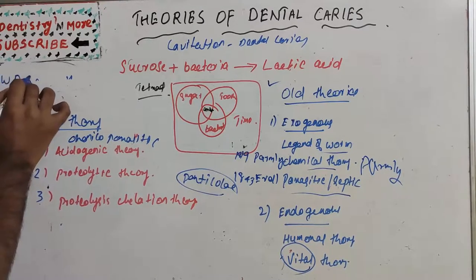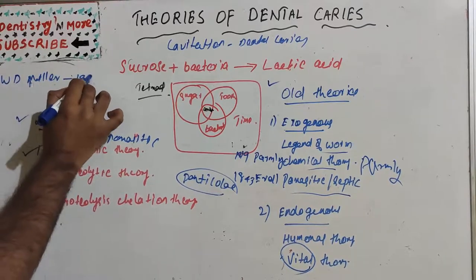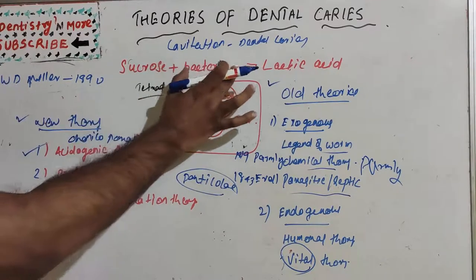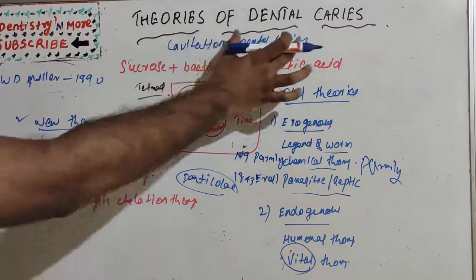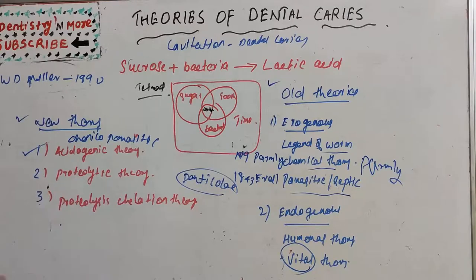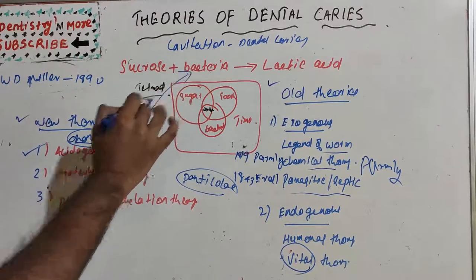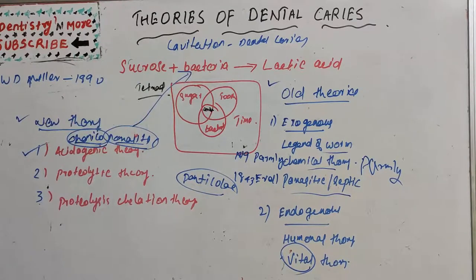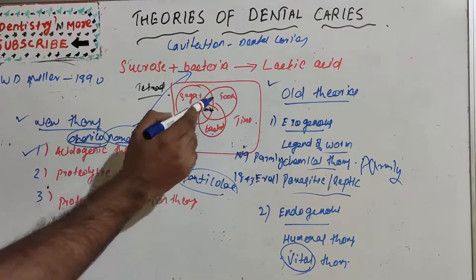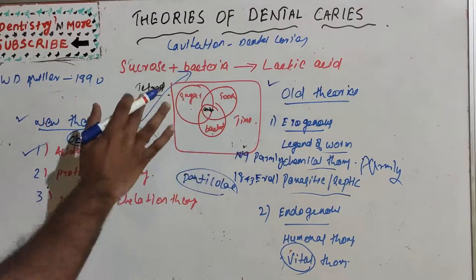The acidogenic theory was put forward by W.D. Miller in 1890. He explained that sucrose and bacteria produce lactic acid, which causes demineralization and cavitation leading to dental caries. He described it as a two-stage chemical parasitic process: first, decalcification of enamel resulting in total destruction, followed by dissolution of the softened residue. He highlighted the roles of chemical action and parasitic action — parasitic action being bacteria, and chemical being the formation of lactic acid. He emphasized the roles of carbohydrate, microorganisms, acid, and dental plaque.